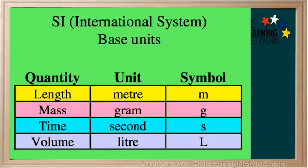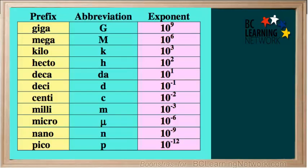The base units are shown here. Length is measured in meters, mass in grams, time in seconds, and volume in liters. No matter what the base unit is, the prefixes remain the same.